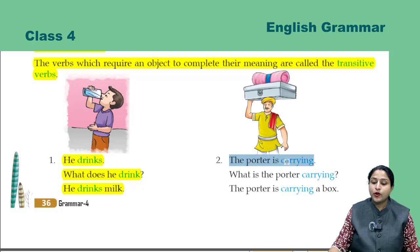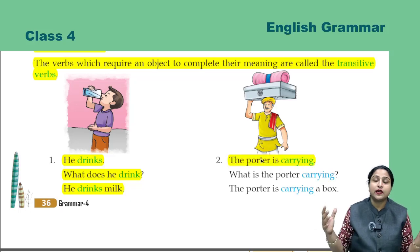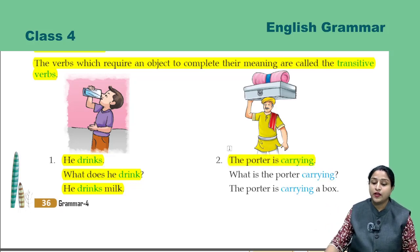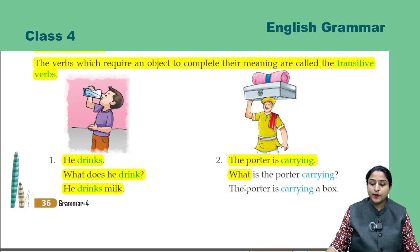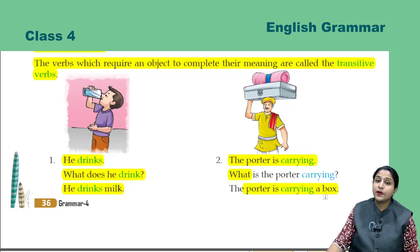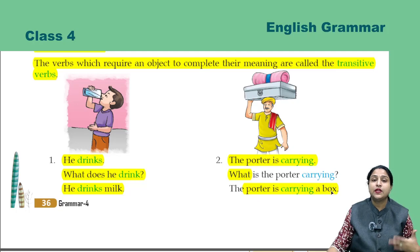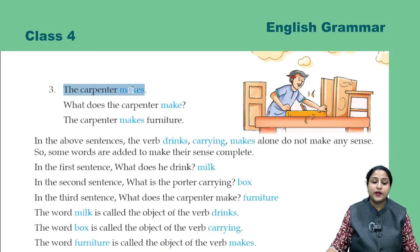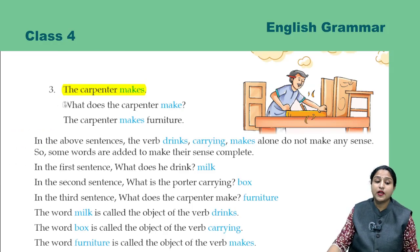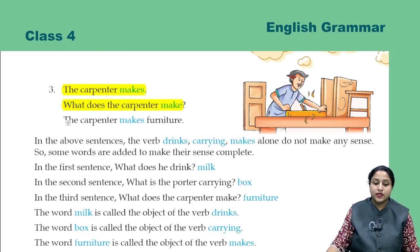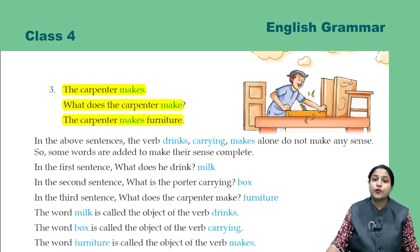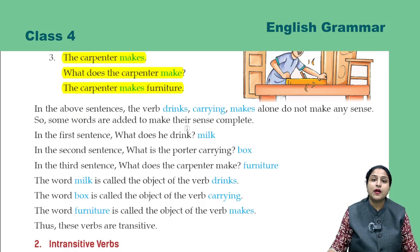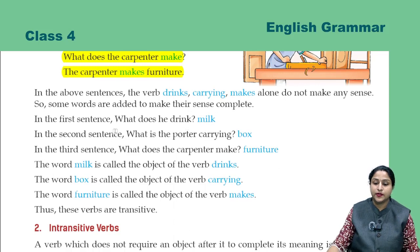Second example: 'The potter is carrying.' What is the potter carrying? 'The potter is carrying a box.' Here also, the verb needs an object to complete its sense. Third: 'The carpenter makes.' What does the carpenter make? 'The carpenter makes furniture.' Here too, the verb requires an object to complete its meaning.